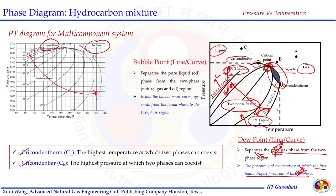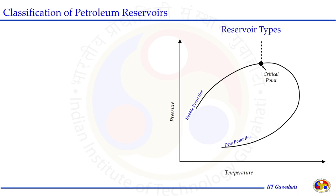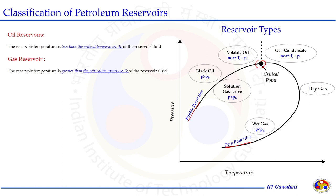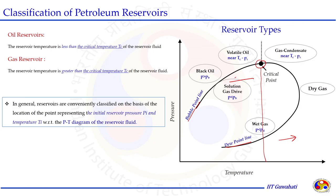The highest temperature and pressure for hydrocarbon mixtures are Cricondentherm and Cricondenbar, which represent the conditions beyond which the phase will be single phase. When classifying petroleum reservoirs thermodynamically, on this PT diagram we see the bubble point curve, dew point curve, and critical point. Beyond the critical point on the left-hand side, we have oil reservoirs; on the right-hand side, gas reservoirs. Oil reservoir: reservoir temperature is less than critical temperature Tc. Gas reservoir: reservoir temperature is more than critical temperature of the reservoir fluid.